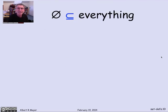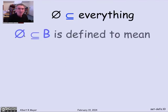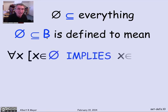Let's look at why that is in more detail. The claim is that the empty set is a subset of everything. So the empty set is a subset of B, any old set. What exactly does that mean, according to the definition of subset? It says that everything that's in the empty set, if it's in the empty set, then it implies that it's in B. For every element, if it's in the empty set, then it's in B.